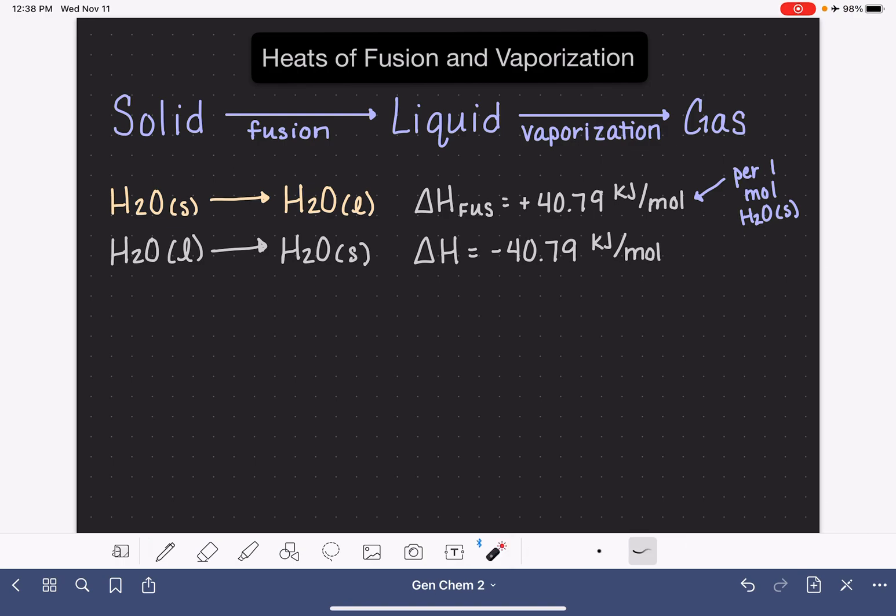So for the freezing process, the value of delta H is negative 40.79 kilojoules per mole. It's per one mole of water, but this time it's liquid water. What does this negative sign tell us? This tells us that it is an exothermic process, releasing heat. So when we convert a liquid to a solid, it releases heat. It's not a detectable thing. We don't feel water heat up as it is solidifying, but the data tells us that that is how it works.